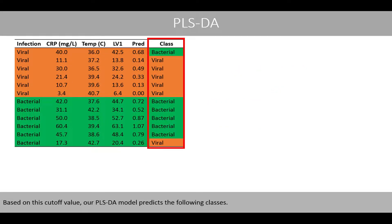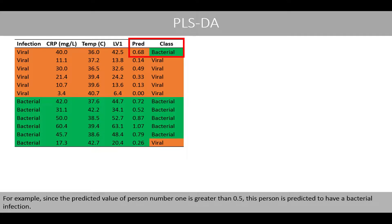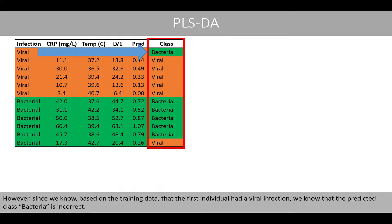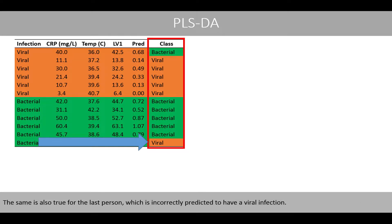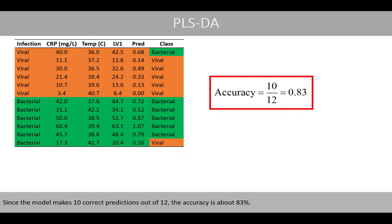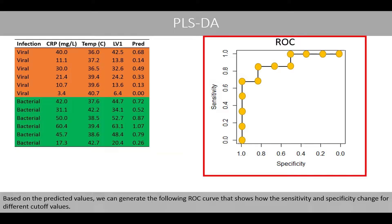Based on this cut-off value, our PLS discriminant analysis model predicts the following classes. For example, since the predicted value of person number 1 is greater than 0.5, this person is predicted to have a bacterial infection. However, since we know based on the training data that the first individual had a viral infection, we know that the predicted class — bacteria — is incorrect. The same is also true for the last person, which is incorrectly predicted to have a viral infection. Since the model makes 10 correct predictions out of 12 possible, the accuracy is equal to about 83%.